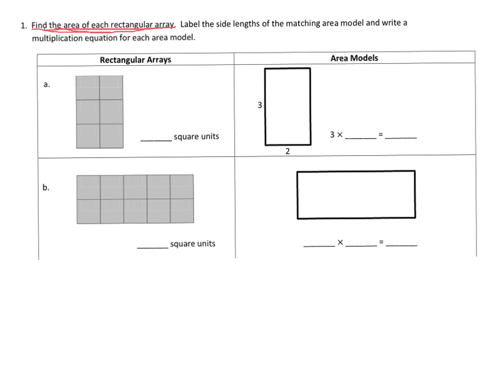Label the side lengths of the matching area model and write a multiplication equation. Basically, we're going to start by counting 1, 2, 3, 4, 5, 6. We know that we have an area of 6 square units, and we can see that this side is 3 going from here to here, and this side is 2 going from here to here. So that's why they labeled this 3 and 2. The equation becomes 3 times 2 equals 6, and there is our multiplication equation.